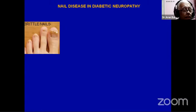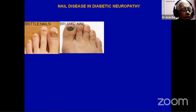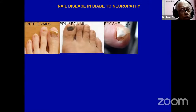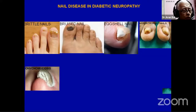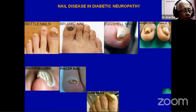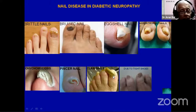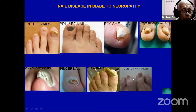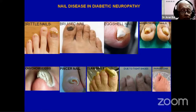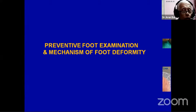Nail changes include brittle nails, bruised nails, axial nails, pincer nails, and hypertrophic nails — a variety of nail changes you see. Dark discoloration of only the first toenail is usually because of tight shoes with a very narrow toe box. You can also have paronychia.